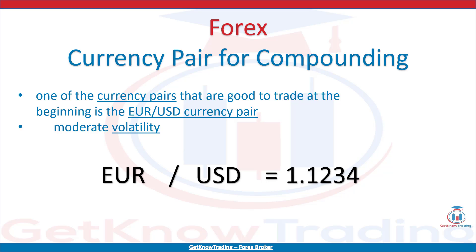If you are a beginner in Forex trading, you should learn how to choose a currency pair for trading. Each currency pair has its own characteristics and you need to select those that are good for your trading strategy. You can use technical analysis, fundamental analysis, price action analysis, or any other. One of the currency pairs that are good to trade at the beginning is the EURUSD currency pair - it has moderate volatility and you can see trends which are good to follow.